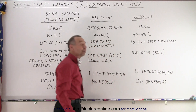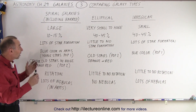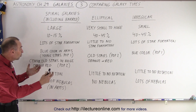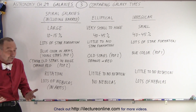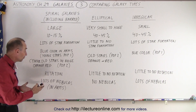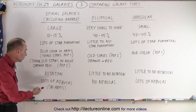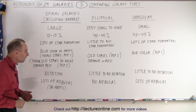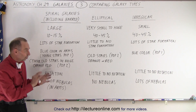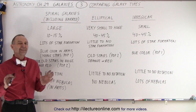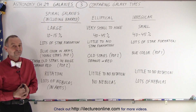So that gives you a pretty good idea of how they compare to one another — size, abundance, appearance, whether or not there's star formation, the colors of the galaxies, whether or not there's rotation, and whether or not you find nebulas. That covers the basic differences between the various types of galaxies.